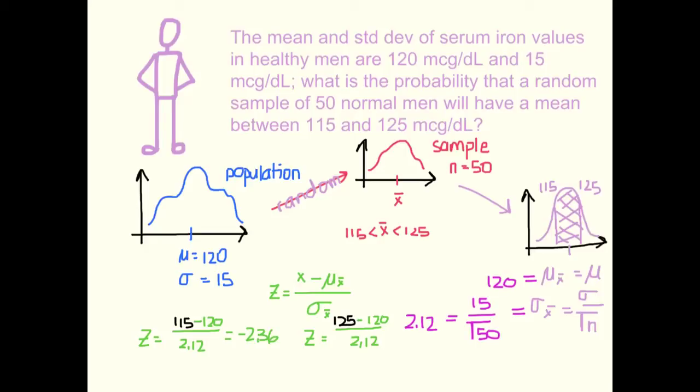And now the other one, we've got 125 minus, again, 120, which is our mean of the sampling distribution, divided by the standard error, which is 2.12. So 5 divided by 2.12, well, that's going to be positive 2.36. So I'll have to squeeze that in over here, 2.36. So now what we have is a different question altogether, and I'm going to take it to another spot, and we're going to look at that.